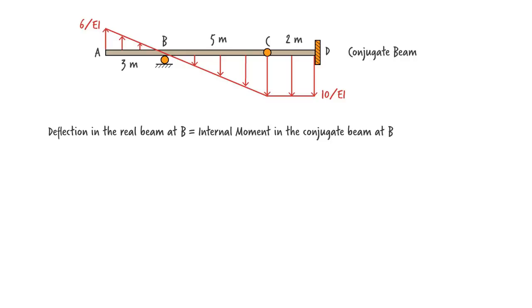In this case, there is no need to calculate the reactions of the conjugate beam. We can cut the beam just to the left of B, draw the free body diagram of segment AB, write the equilibrium equations, then solve them in order to find the internal moment we are looking for. Here is the free body diagram for segment AB.